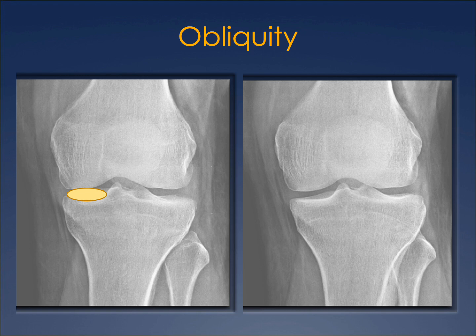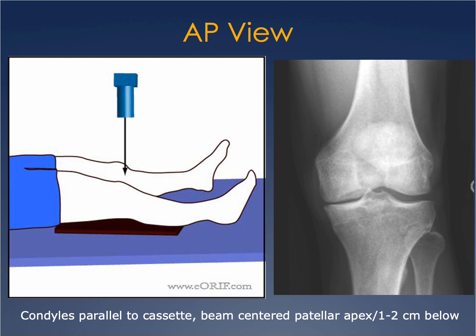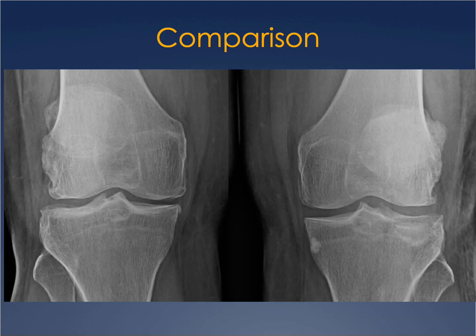Notice the oval appearance on the left versus the flatter appearance on the right — the left image is actually a more accurate interpretation of joint space narrowing, because the right image has obliquity from improper positioning. If the knee is not appropriately positioned, you will get obliquity, and you need to be able to identify that. Another way to determine whether joint space narrowing is real is to look at a comparison radiograph, which is especially useful for unilateral symptoms.